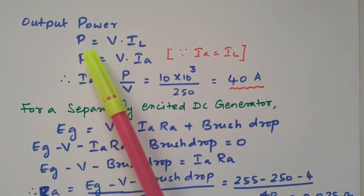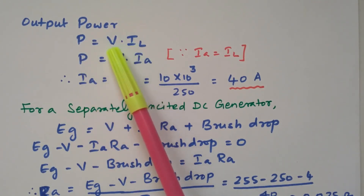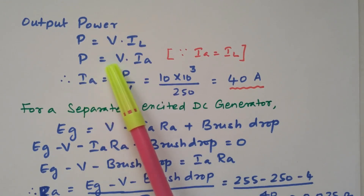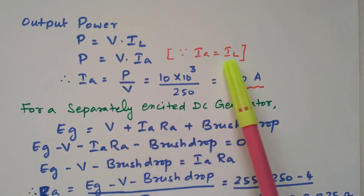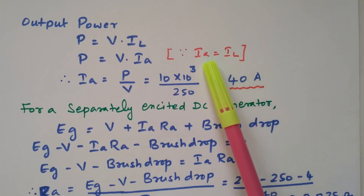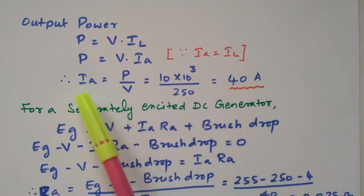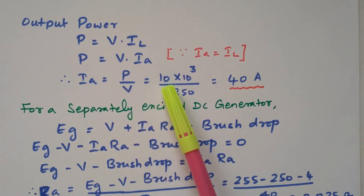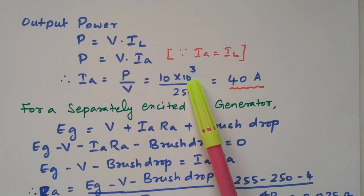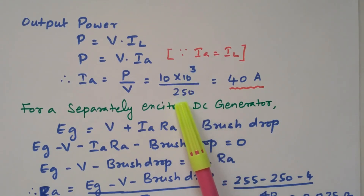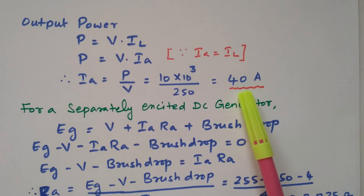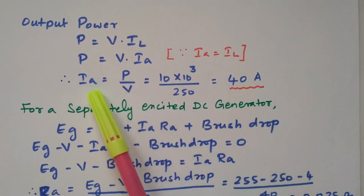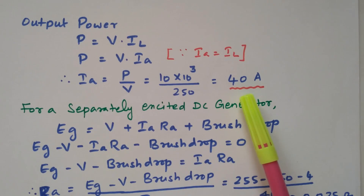Output power is given, so P = V × IL = V × Ia, since Ia equals IL. From this equation we can find Ia = P ÷ V. Power is 10 × 10³ watts divided by terminal voltage 250, giving us Ia = 40 amperes. The armature current is 40 amperes.